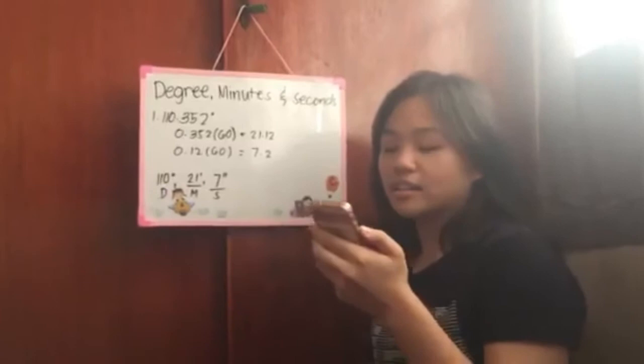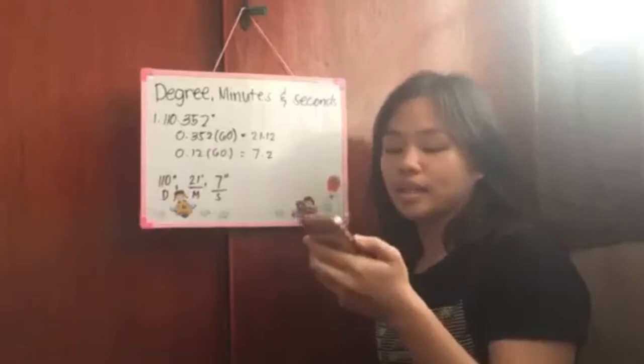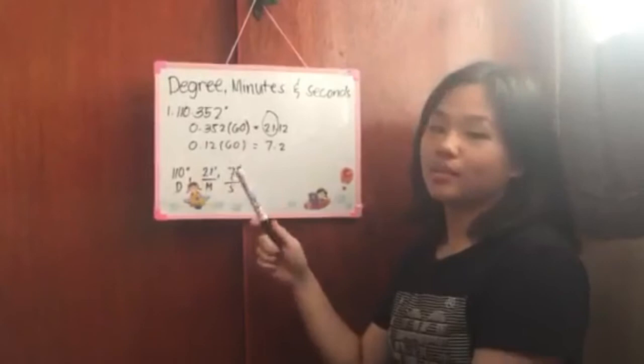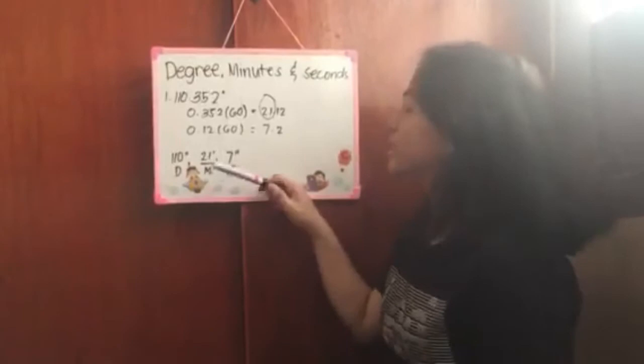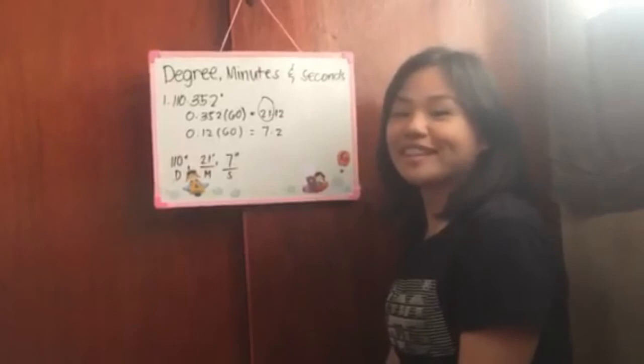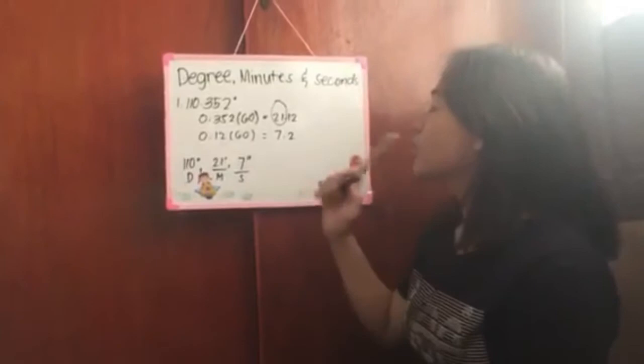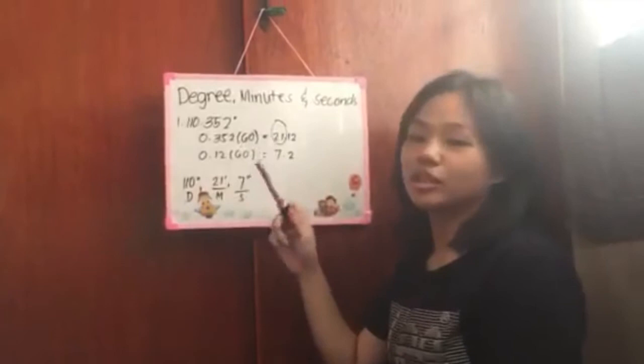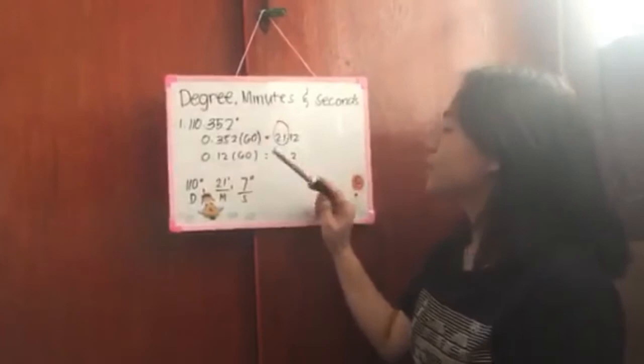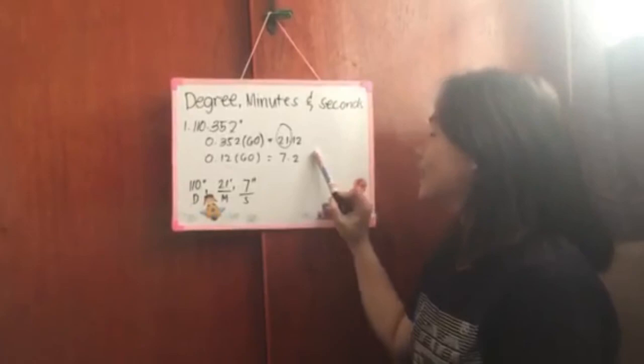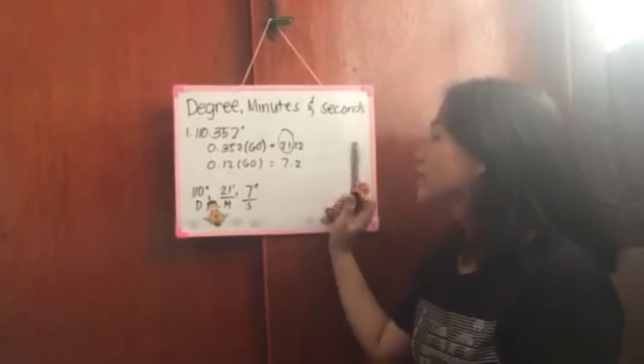The example is 110.352 degrees. Your degree is always what's to the left of the decimal point. Here, our degree is 110. So this is how you write it: 110 with degree symbol. Then to get the minutes, what's to the right of the decimal, multiply it by 60. But put a 0 point. So it becomes 0.352 times 60. The result is 21.12. Your minute is just what's to the left of the decimal point. So just the 21. Place it here, 21 with apostrophe. That's always how you write it.